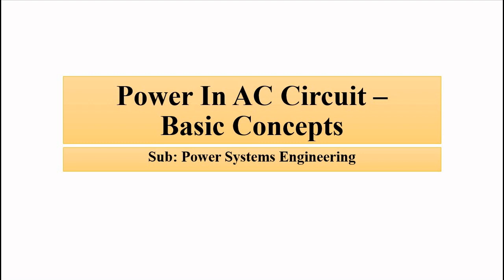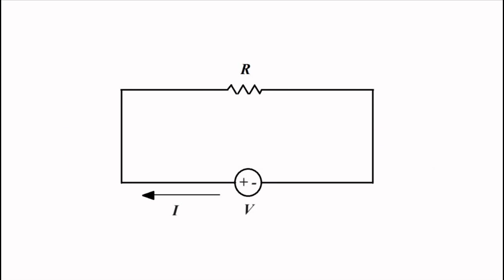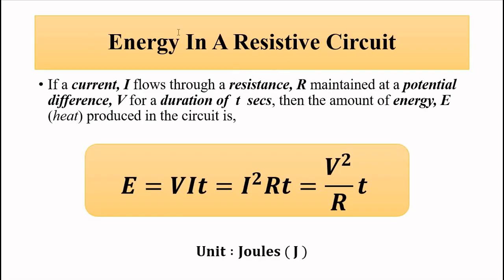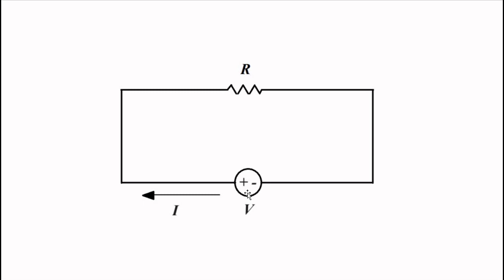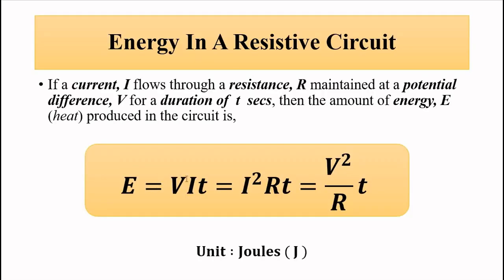First we will consider a basic purely resistive circuit connected to a voltage source. The energy in this purely resistive circuit is given by the relation using a DC voltage source — it is the product of voltage, current and time, which is the duration for which the current flows through the resistance. Applying Ohm's law and substituting V with IR gives I²RT, and substituting I with V/R gives V²/R × T.